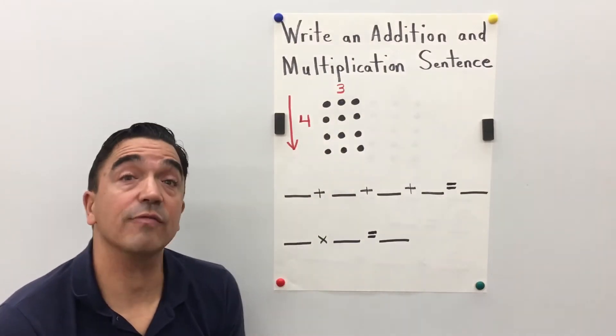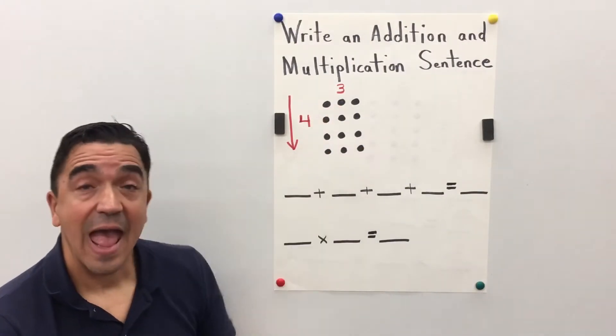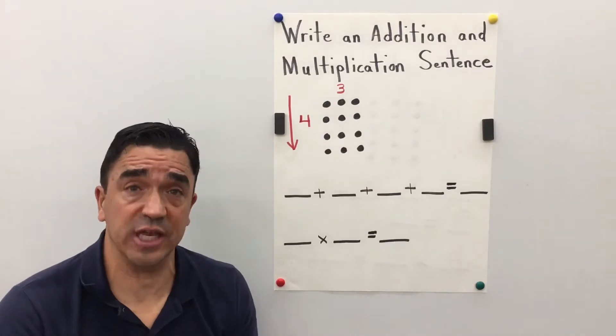We have four rows and three counters in each row.